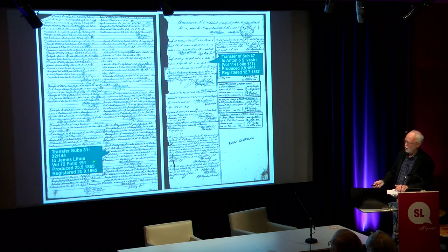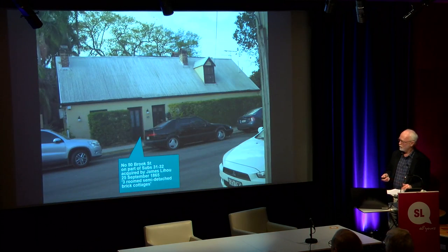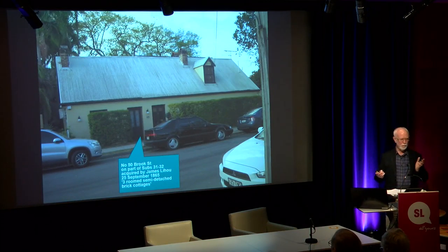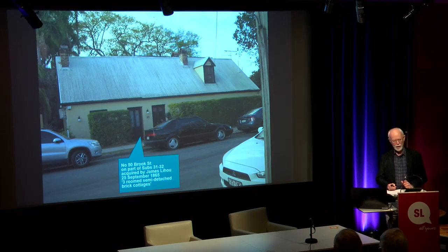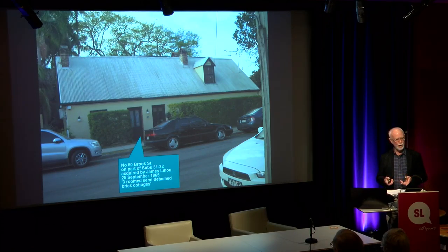Later there's another property of interest — a house across the road from us. The Leos buy that land in 1865, and that's this group of little terraces. I now think that what happened with my house is that it was built between Silvestri acquiring the land in 1863 and the Leos buying the land opposite. I think the Leos arrived in Brisbane only a couple of days after Silvestri bought the piece of land, and I think they were looking for work. James Leo was a qualified stonemason — he had building skills.